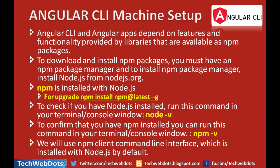Once npm is installed with Node.js, you can also upgrade your existing npm using the command: npm install npm@latest -g. The -g flag is used for global installation. To check if you already have Node.js installed, run: node -v in your terminal — -v is for version. To confirm npm is installed, open the terminal and type npm -v.